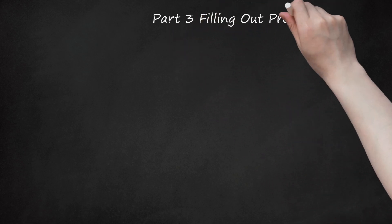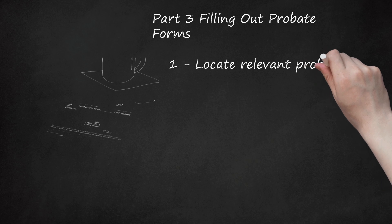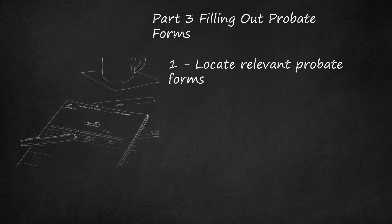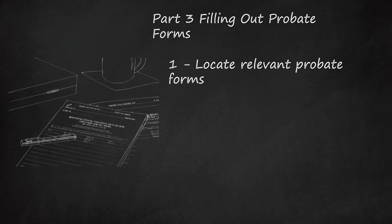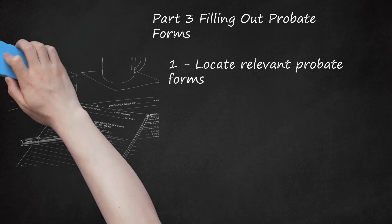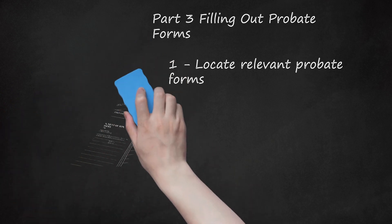Part 3: Filling Out Probate Forms. Step 1: Locate Relevant Probate Forms. Every county has slightly different forms or legal document formats that the PR or executor must use. You can conduct an internet search for the name of the county where the decedent resided and the words 'probate forms.' Most county courts have websites that provide these forms for download, information on how to locate the forms, or contact information for the probate court. You can also check with the county clerk or the court directly.